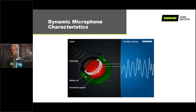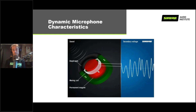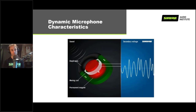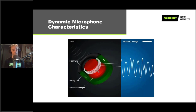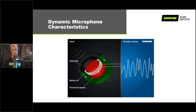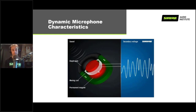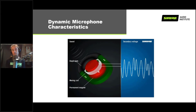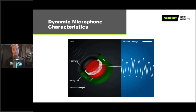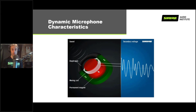Dynamic mics have characteristics they're known for: they're really rugged because they're simple devices with no active electronics. They're very robust in different environmental conditions — high heat, humidity, low temperatures — and can often be dropped without damage. They're also more affordable because of fewer components. Probably the most popular microphone in the world is the SM58, a dynamic microphone that's been the most popular mic since the late 60s.